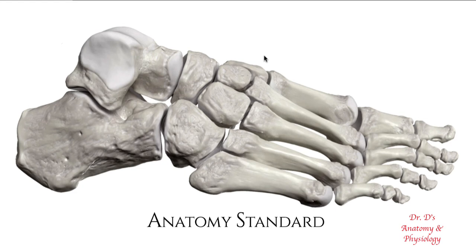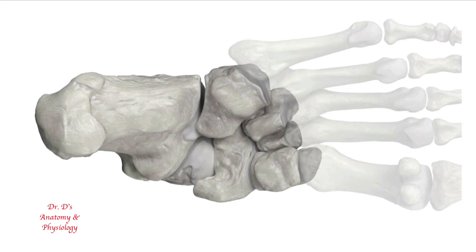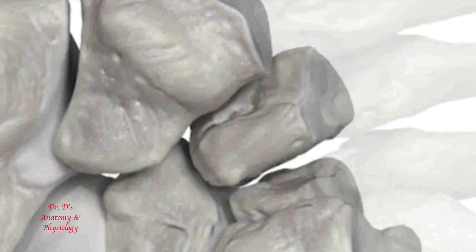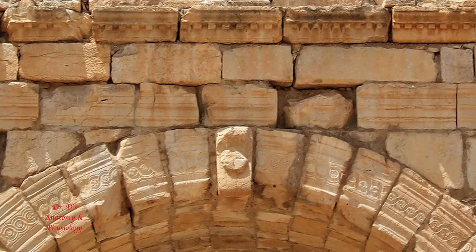If we go back to the lateral view we can note that along with the longitudinal arches there is a transverse arch. If we flip the foot around we can look at the bones that form the arch from below. Note that the cuneiforms, particularly the lateral cuneiform, have a wedge-like shape. This is similar to a Roman arch — the Volubilis triumphal arch — where the stones forming the curving roof have a wedge-like shape, just like the cuneiforms that form the transverse arch of the foot.